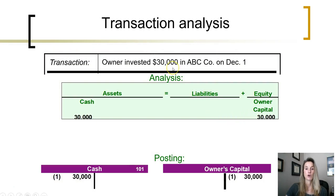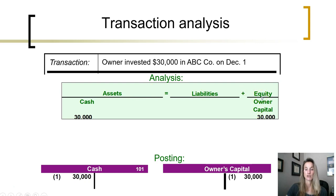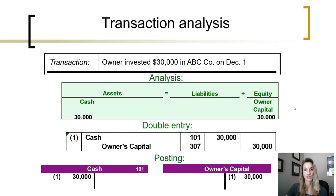First transaction: the owner invested $30,000 into the company on the 1st of December. We need to determine what accounts were affected by this transaction. When an owner invests, cash is going up and owner's capital is increasing. The two accounts we need to change are cash, which is an asset, and owner's capital, which is an equity account. In the general journal we will prepare a journal entry. We're just going to call this transaction one on date one.